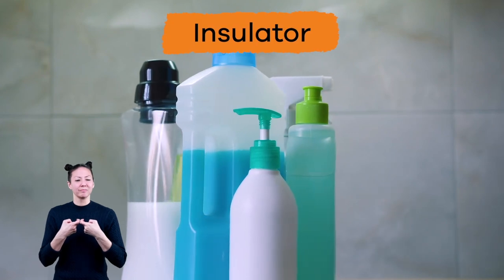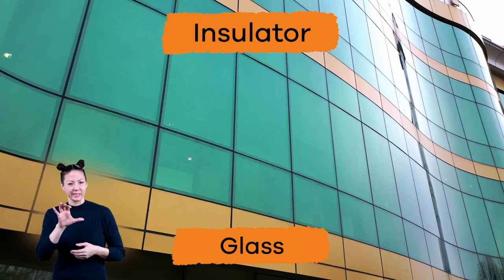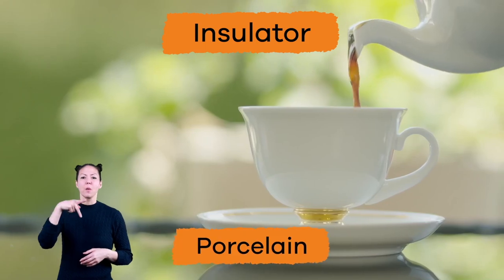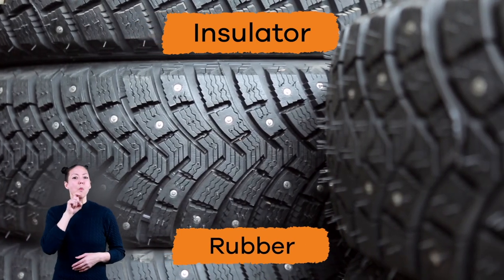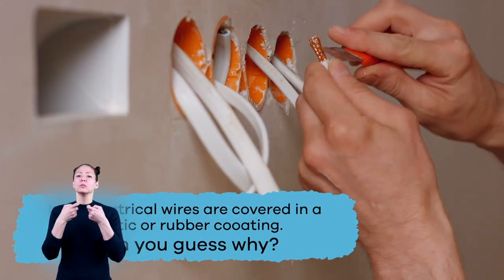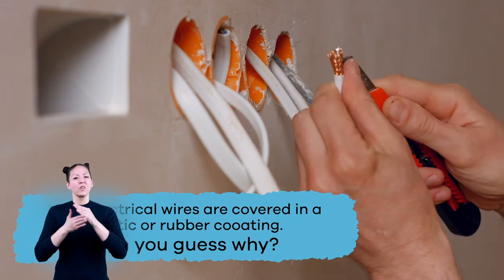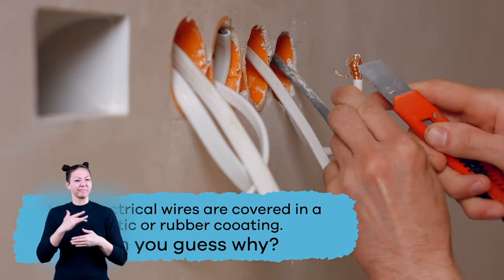Examples of insulators include plastic, glass, porcelain, and rubber. Most electrical wires are covered in a plastic or rubber coating. Can you guess why?